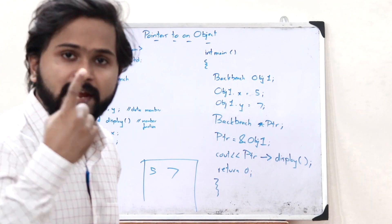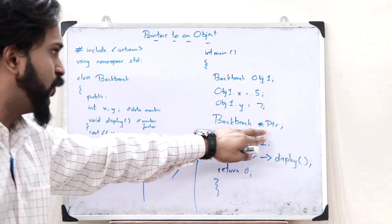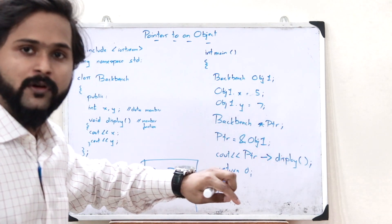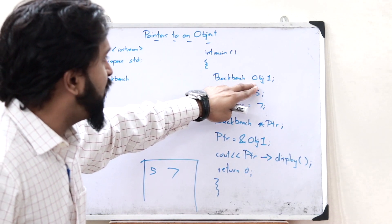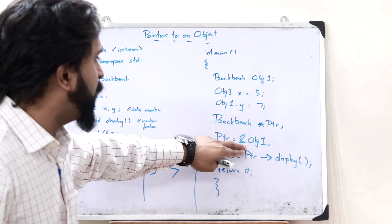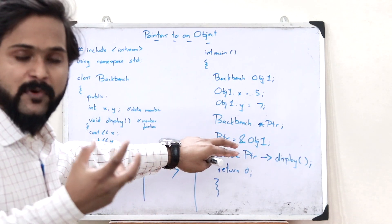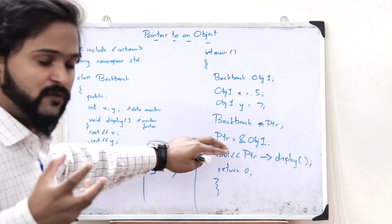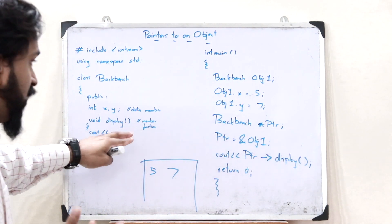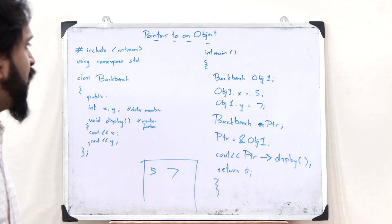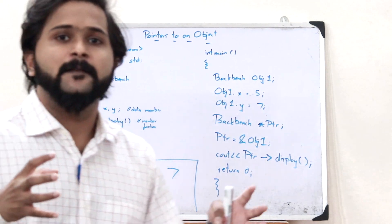Here, we have learned three things. First, how to create a pointer — a pointer is created using the star symbol placed before a name. Second, in order to obtain the address of a particular object, we use the ampersand (&) symbol. Third, using the pointer, we can invoke or call the data members and member functions of the object whose address is stored, using the arrow operator (->). This is basically how we use a pointer to a particular object of a particular class in C++.